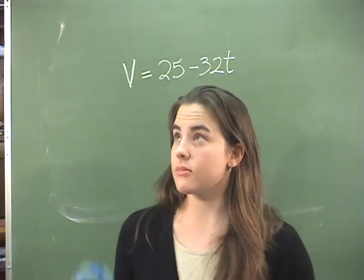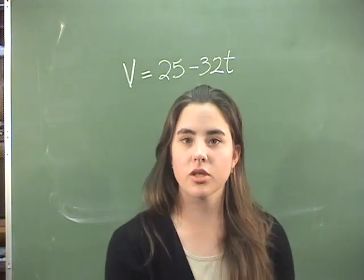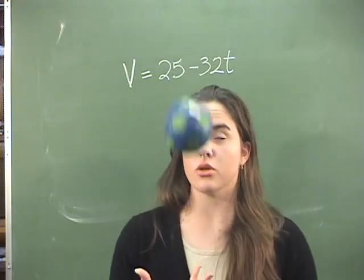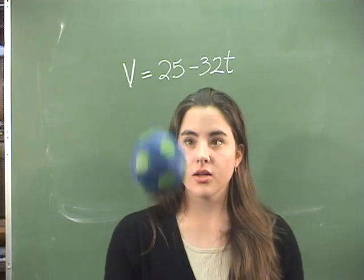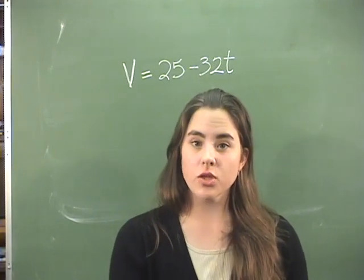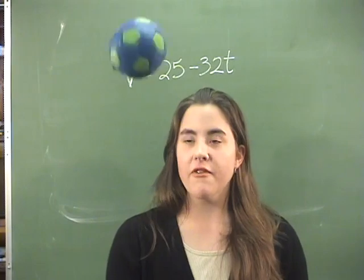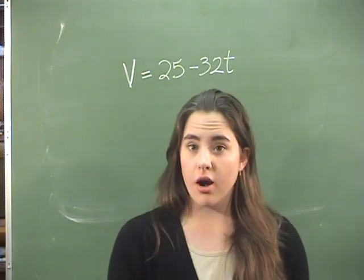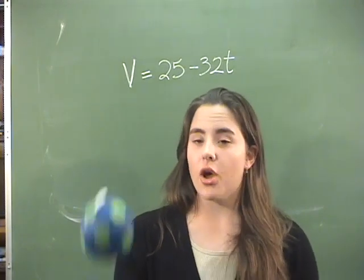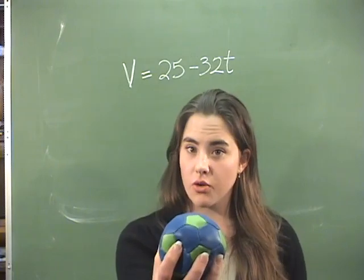If you toss a ball around, it goes up with a certain speed and comes back down with a certain speed. Using mathematics, it's actually possible to measure how fast and how far this ball will go if you know how fast I'm throwing it when I start throwing it.